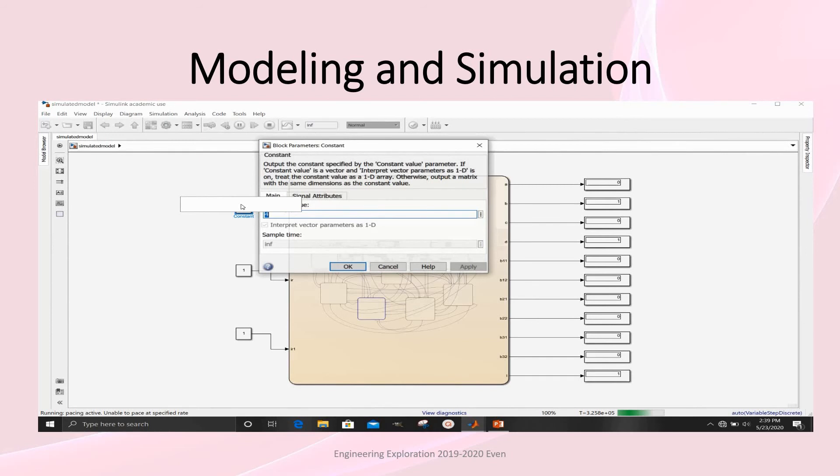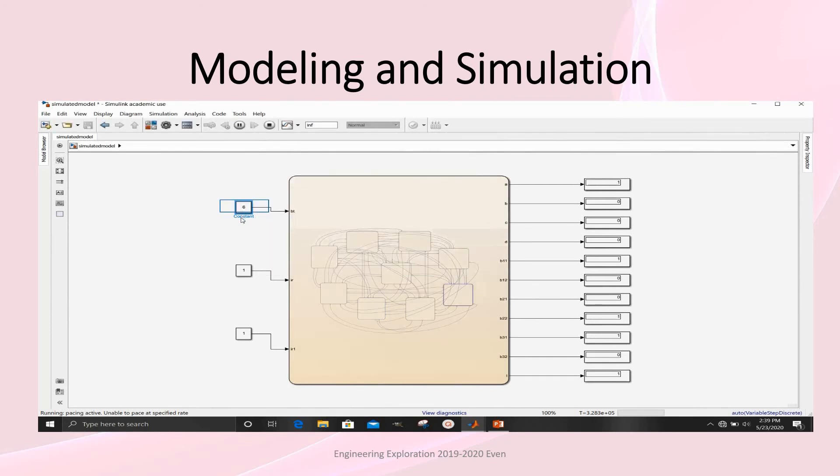If we change the constant value as 6, it moves to the right with the brush state.